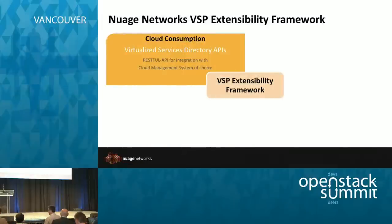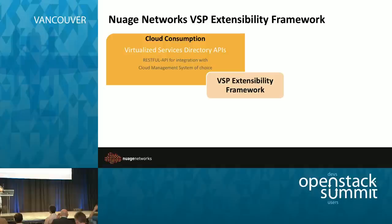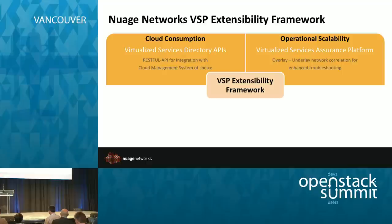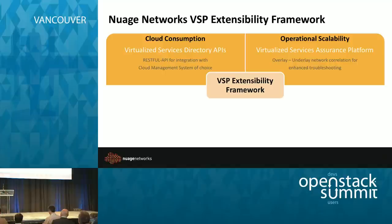The extensibility framework starts with the cloud consumption layer, or the set of APIs that plug into what we call the Virtualized Services Directory, to expose a set of RESTful APIs for incorporation into cloud management systems like OpenStack. We also have — and I just announced — a Virtualized Services Assurance Platform, which is a way to correlate the overlay network or the virtualized network with the underlay, which is the physical network. If you have a problem running around in a VM somewhere in your data center, you want to figure out where it is on the physical layer and correlate those two events.